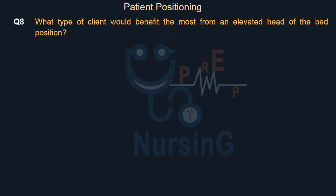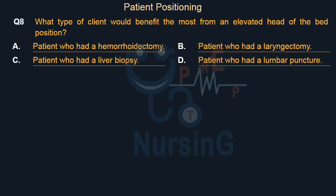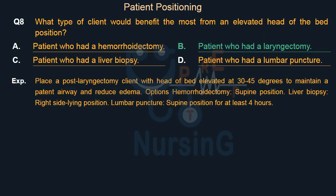What type of client would benefit the most from an elevated head of bed position? Option A, patient who had a hemorrhoidectomy; Option B, patient who had a laryngectomy; Option C, patient who had a liver biopsy; Option D, patient who had a lumbar puncture. The right answer is Option B, patient who had a laryngectomy. Place a post-laryngectomy client with head of bed elevated at 30–45 degrees to maintain a patent airway and reduce edema.